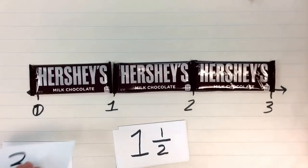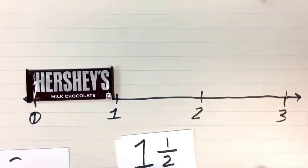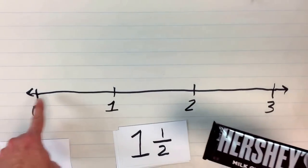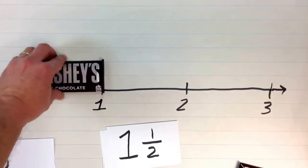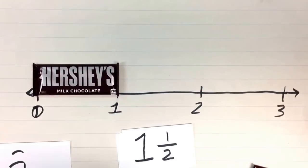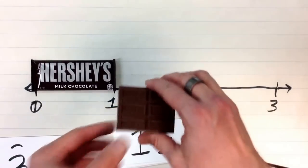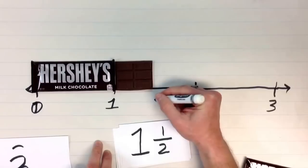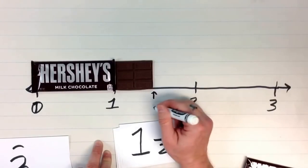So, for example, what if we had one and a half candy bars? Well, if we had one and a half candy bars, we would have one whole, zero to one, but then somewhere in between, we would have a half a candy bar. So, here I have half of a Hershey's candy bar. That would mean that one and one half would be right about here. One and one half.